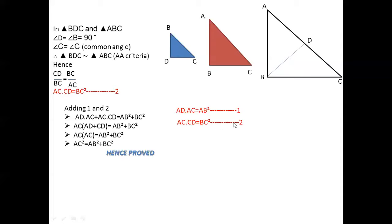Now we have to add both equations. Adding equation 1 and 2: AD into AC plus CD into AC is equal to AB square plus BC square. What is common? AC. So if you take AC common, you will get AC times (AD plus CD) which equals AB square plus BC square. AD plus CD combine to give AC. So AC into AC will be AC square which is equal to AB square plus BC square.